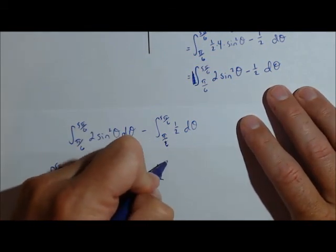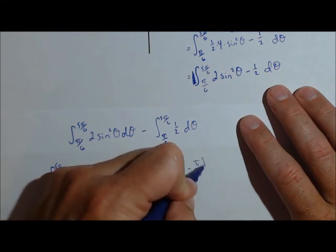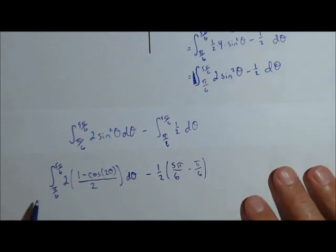Now this one we can finish off, it's just 1 half times 5 pi over 6 minus pi over 6. So we'll calculate that in the next step.